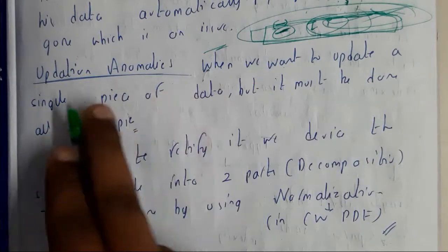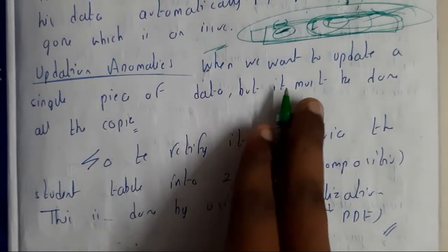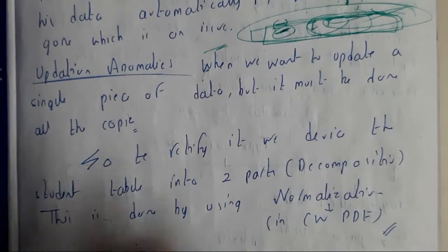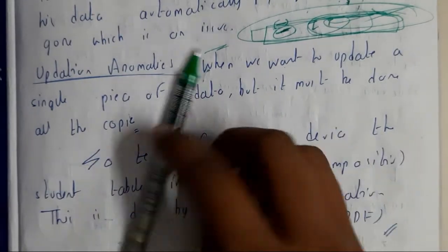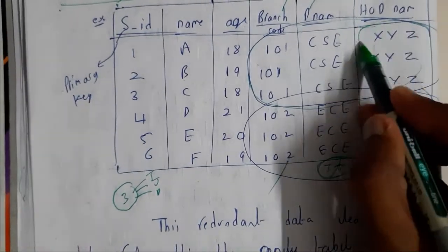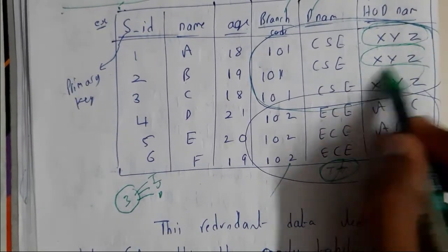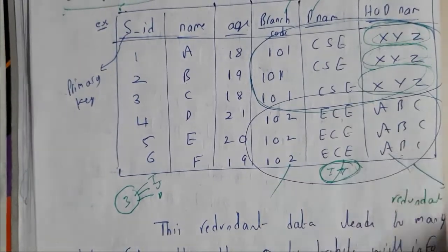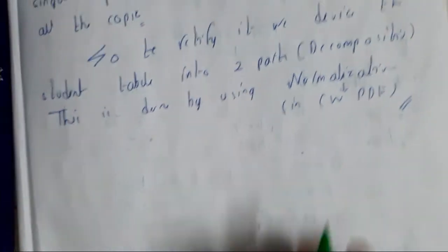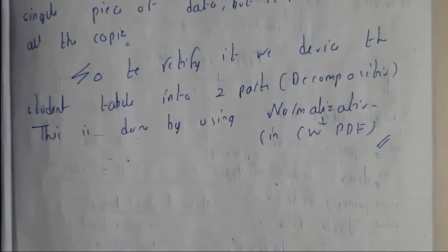Now let us go through updation anomaly. When we want to update a single piece of data, it must be done in all copies. If you want to update the name of the HOD of CSE department to ABC, you need to do it individually in each and every record. That will be the issue with updation anomaly.